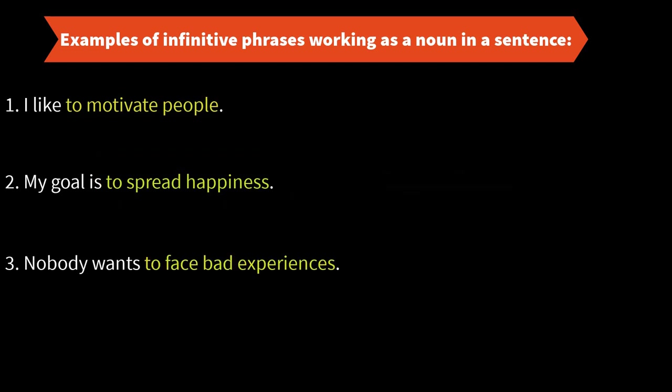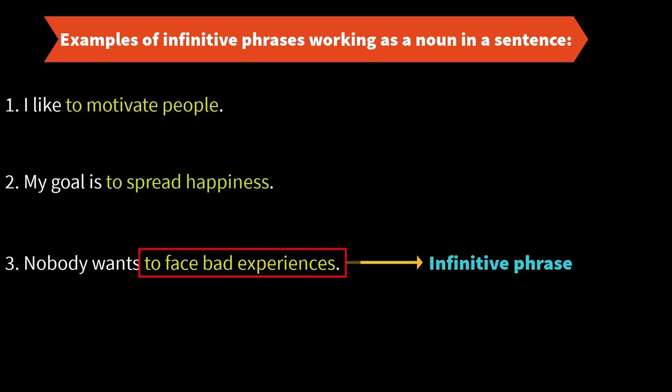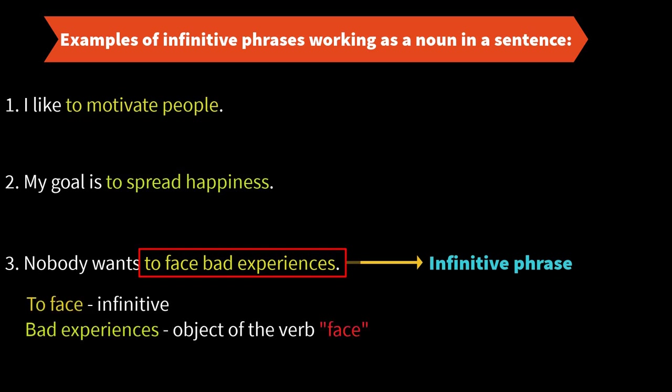Nobody wants to face bad experiences. In this example, 'to face bad experiences' is the infinitive phrase. 'To face' is the infinitive and 'bad experiences' is the object of the verb 'face.' This complete phrase 'to face bad experiences' is working as a noun. Nobody wants what? You always want something, and something is always a noun. The answer — to face bad experiences — is the infinitive phrase working as the object.